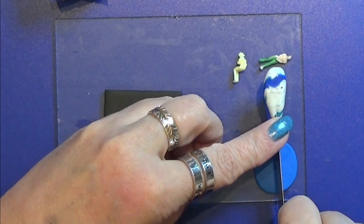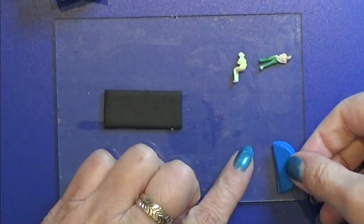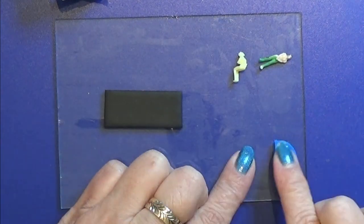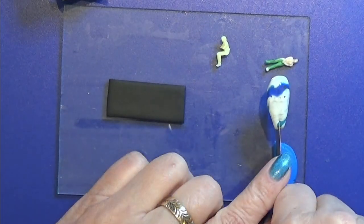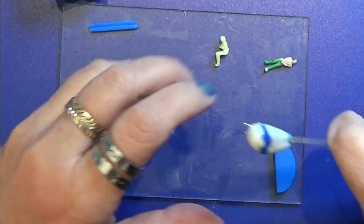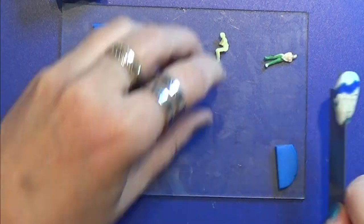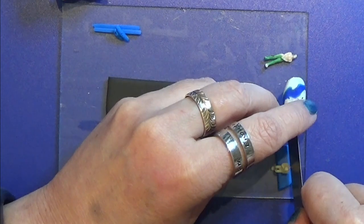So it's time to make the furniture for the caravan. First I rolled some clay through the pasta machine on my thickest setting and I laid that doubled as you saw, and I'm going to cut out a piece that I want to be a couch.